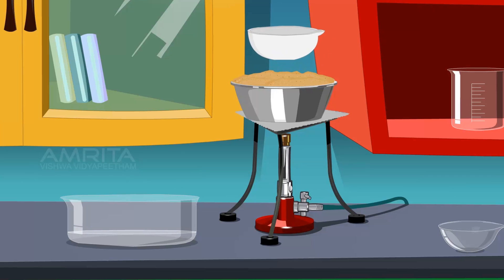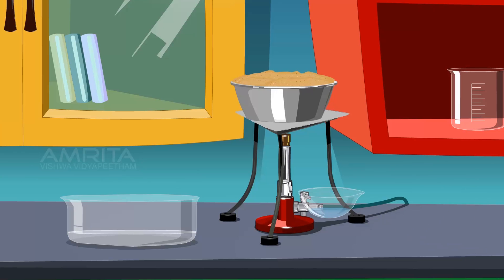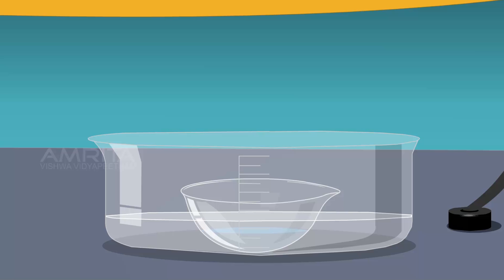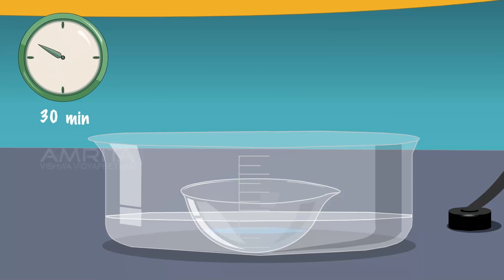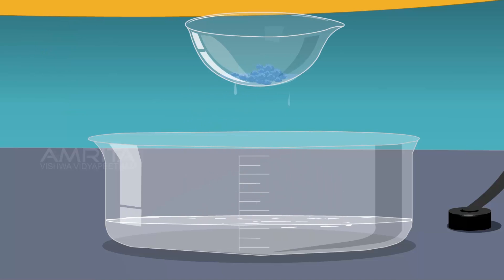Now turn off the burner and stop heating, and transfer the hot solution into the crystallizing dish. Place the crystallizing dish containing hot saturated solution on the trough half filled with water. Allow it to cool slowly for some time. Deep blue crystals of copper sulphate will separate out. After about half an hour, the crystallization is complete.